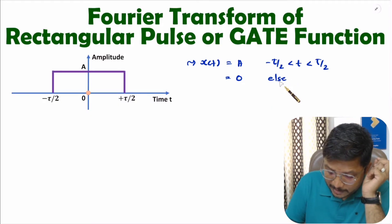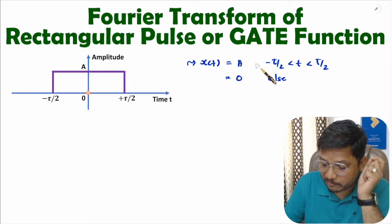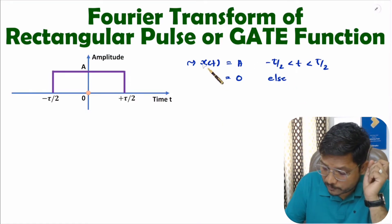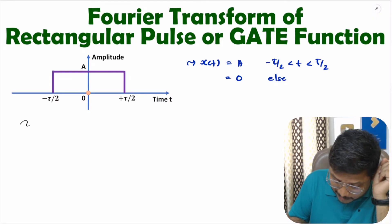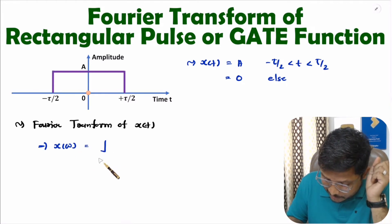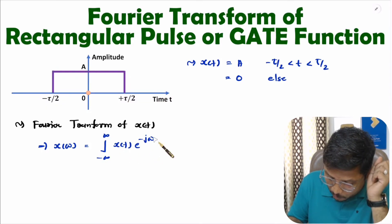That is how one can represent the given rectangular pulse in the form of a mathematical function. Now I will identify the Fourier transform of x(t). The Fourier transform of x(t) is X(ω), and that can be expressed as the integral from minus infinity to plus infinity of x(t) into e to the power minus jωt dt.